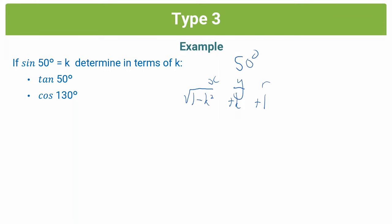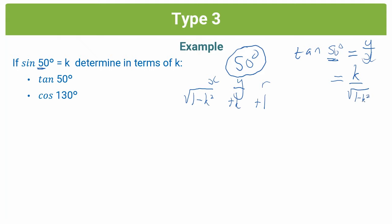We can now use these to solve our question. For question one, tan 50 degrees — this 50 is the same as the 50 in the question and the same 50 we've calculated x, y, and r for. We simply put in the definition for tan, which is y over x, and substitute our values. That gives us k over root(1 minus k squared).